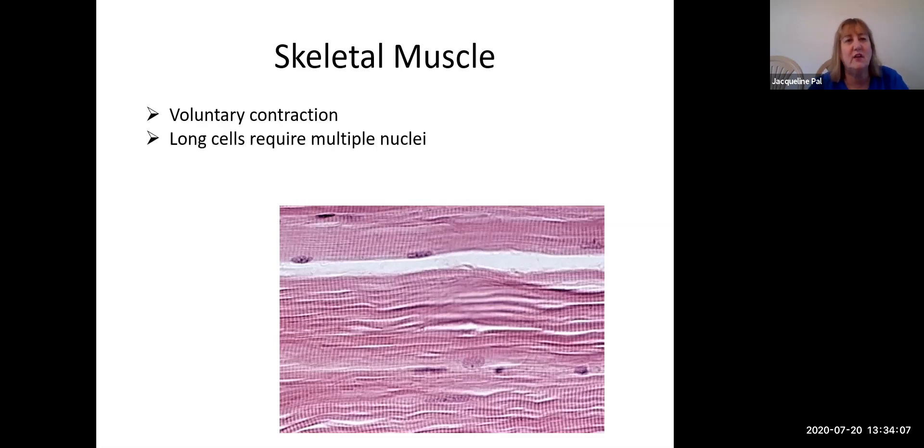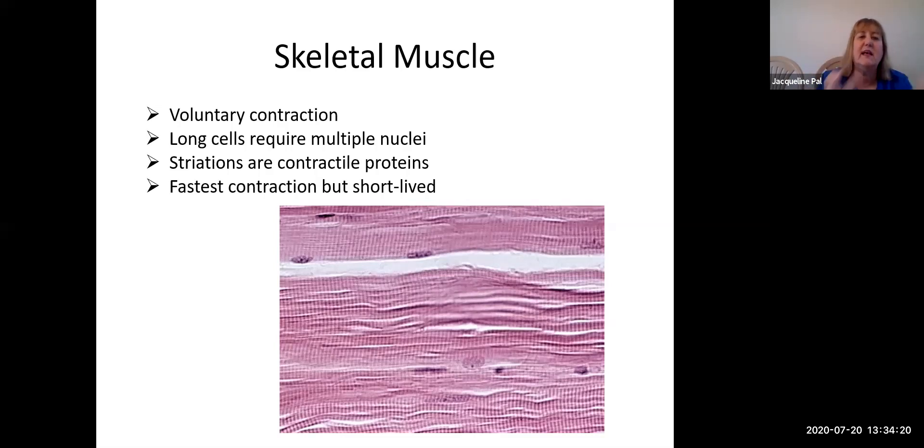So as we talked about, this was voluntary contraction. These long cells can require more than one nucleus for the cell. We'll talk more about that when we come back, when we talk about the muscular system. And of the three types of muscle, this has the fastest contraction, but it's very short lived. If you think about in the Olympics, they have that clean and jerk where they're lifting the super heavy weights. How long do they have to hold that? Two seconds.